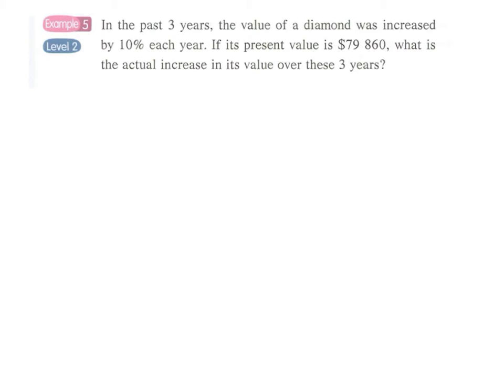Example 5, which is a bit more difficult. In the past three years, the value of a diamond was increased by 10% each year. So we can actually draw a timeline here, and in year 0 the value is unknown.